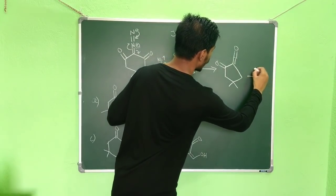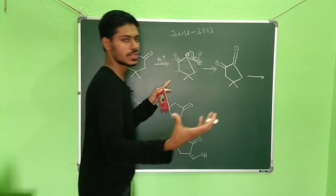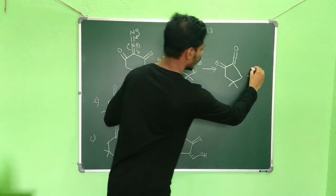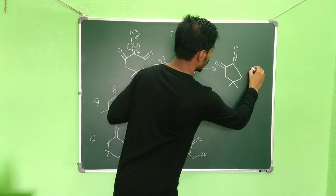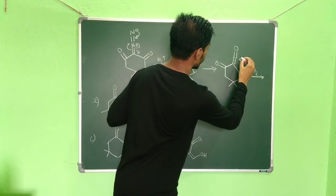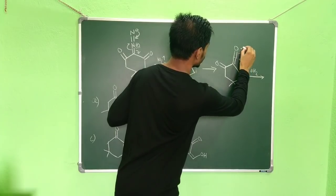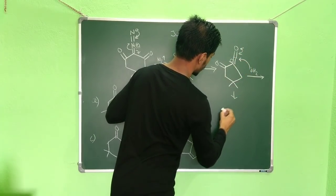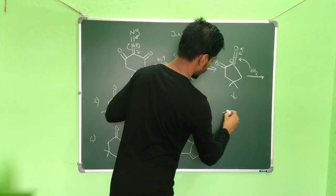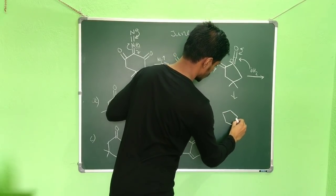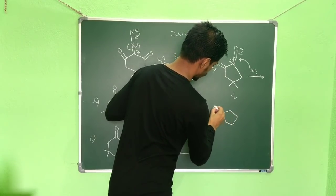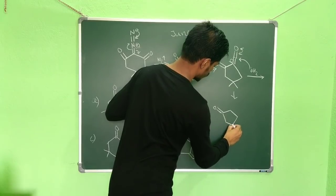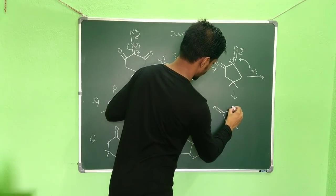Now, if you remember the reaction step, aqueous THF is used, so water molecules are present. This water molecule can attack the ketene, and it will open this up. What you will get is this carbonyl group with these two alkyl groups over here.